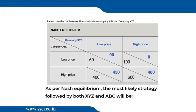You are given the payoff table — the profit that each party will gain depending upon what the other party will do. The way to think about it is this: suppose we are company XYZ. Focus on the blue decisions. We have to take a decision whether we should charge a low price or high price, depending upon what ABC will do.